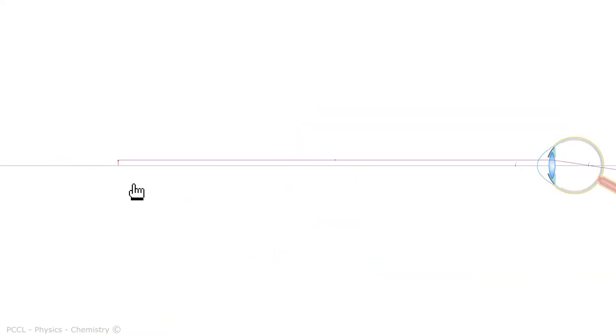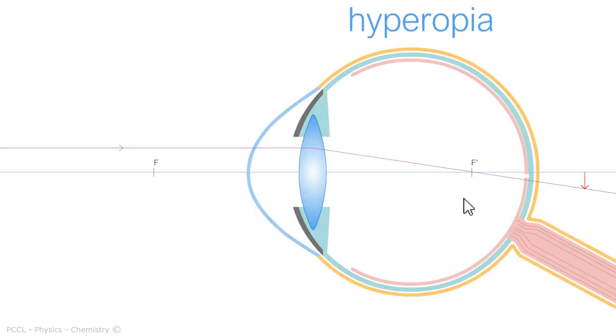There is the symmetrical defect, I would say, the counterpart of myopia, which would be hyperopia. Those who have it have difficulty accommodating when the objects are close. They see well from a distance and they cannot see well near. They see blurry.